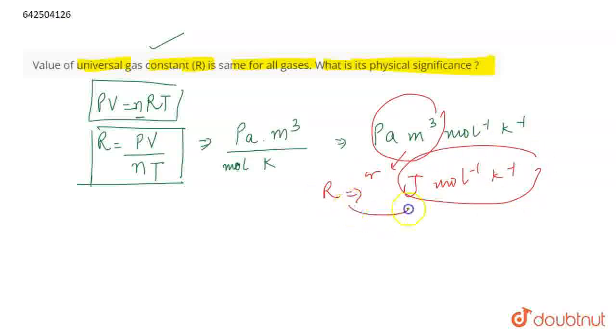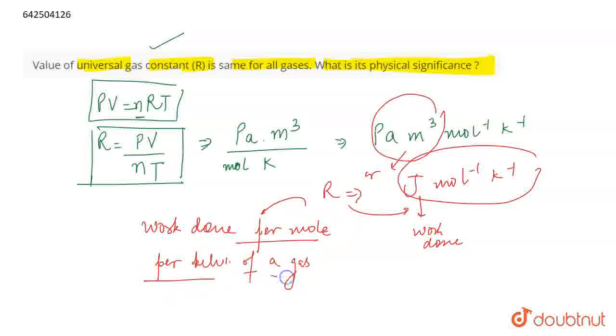The units of R are joule per Kelvin per mole. This signifies that R is the work done. Why work done? Because joule is the unit of work done. So R is the work done per mole per Kelvin of a gas.